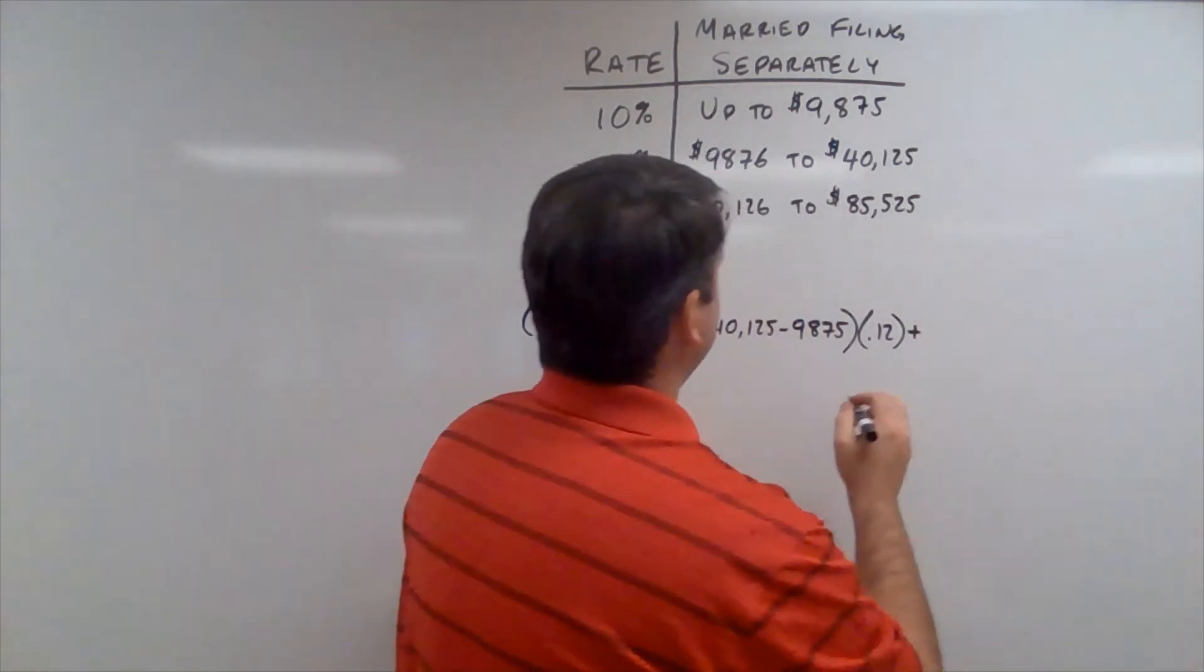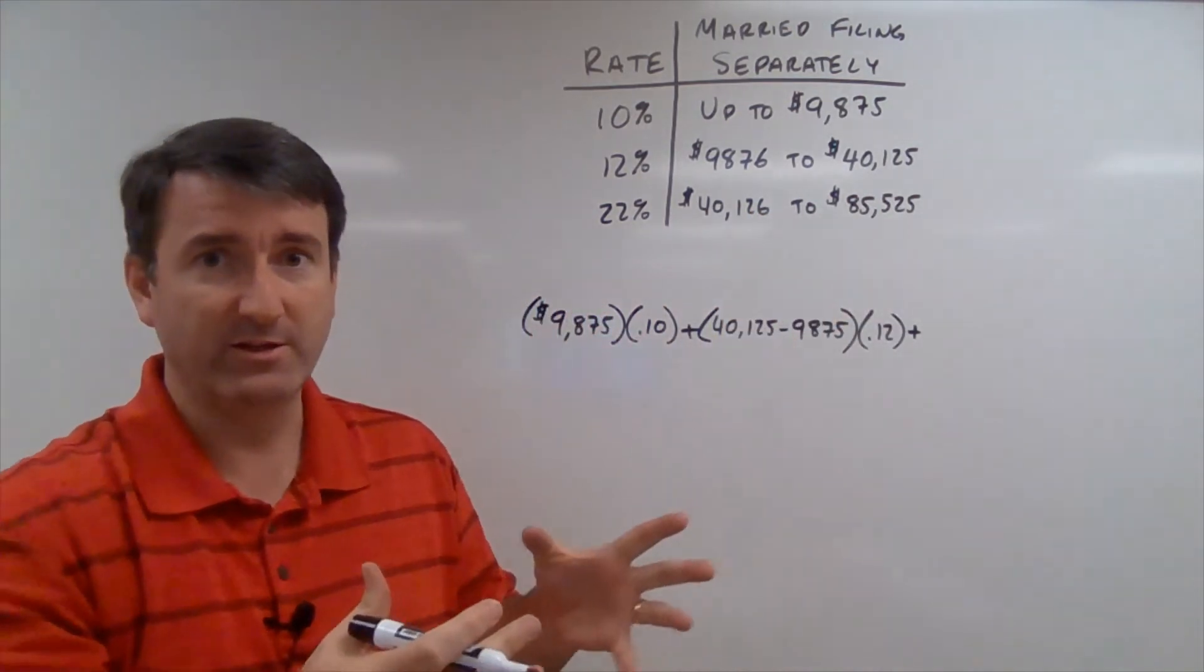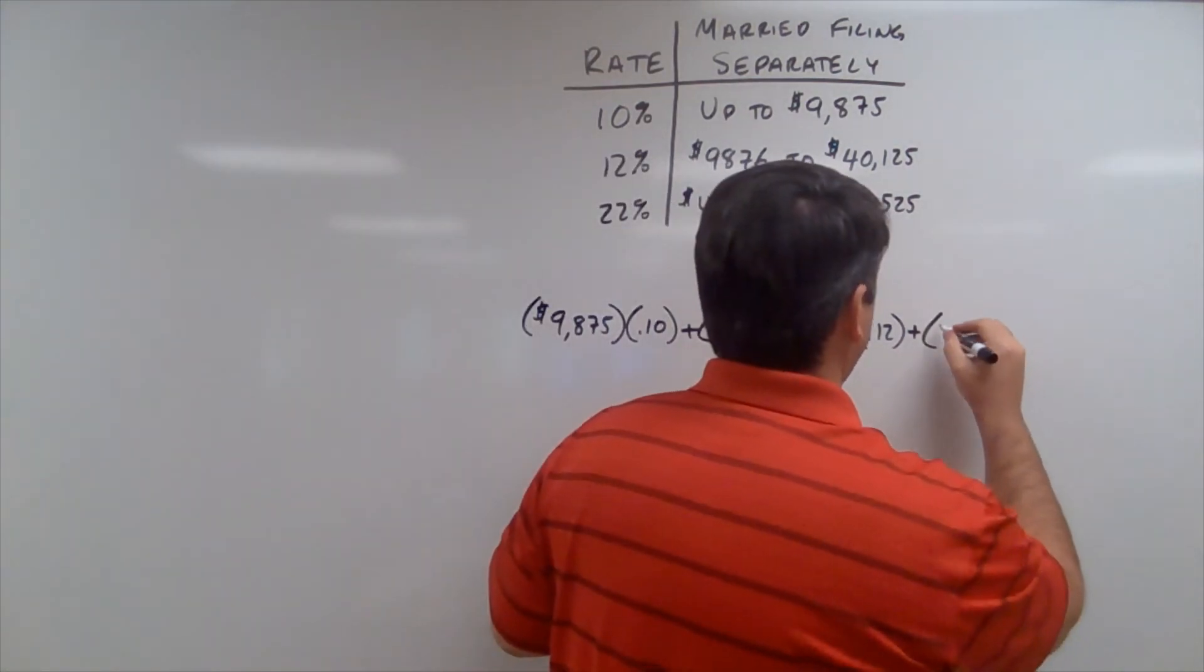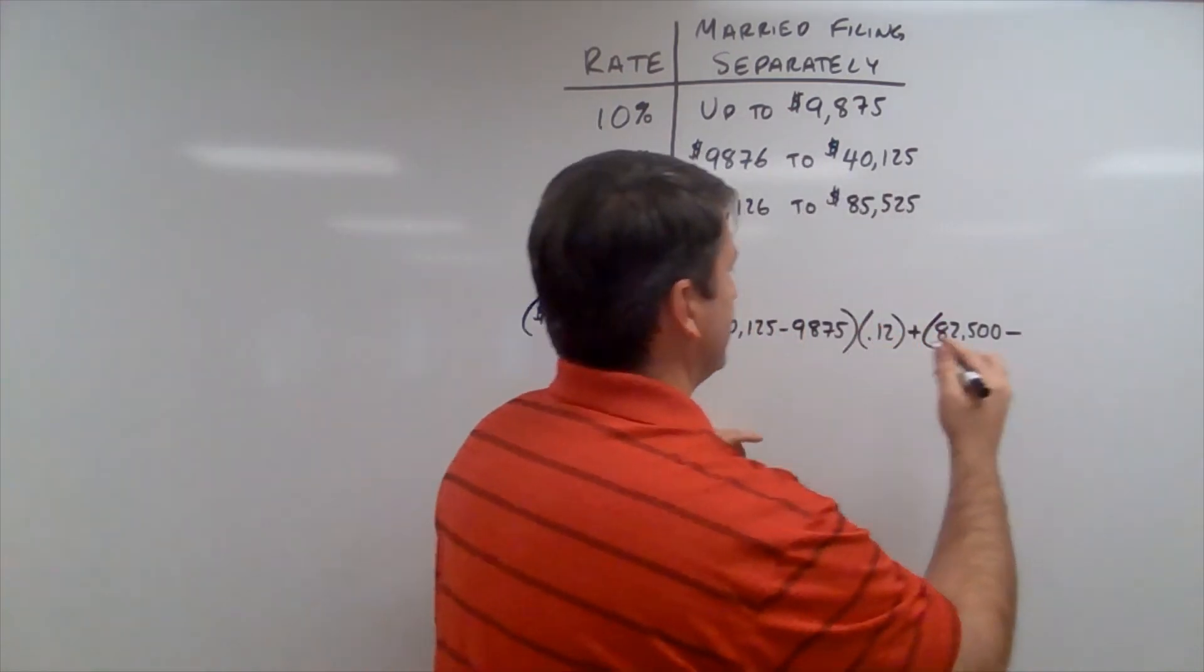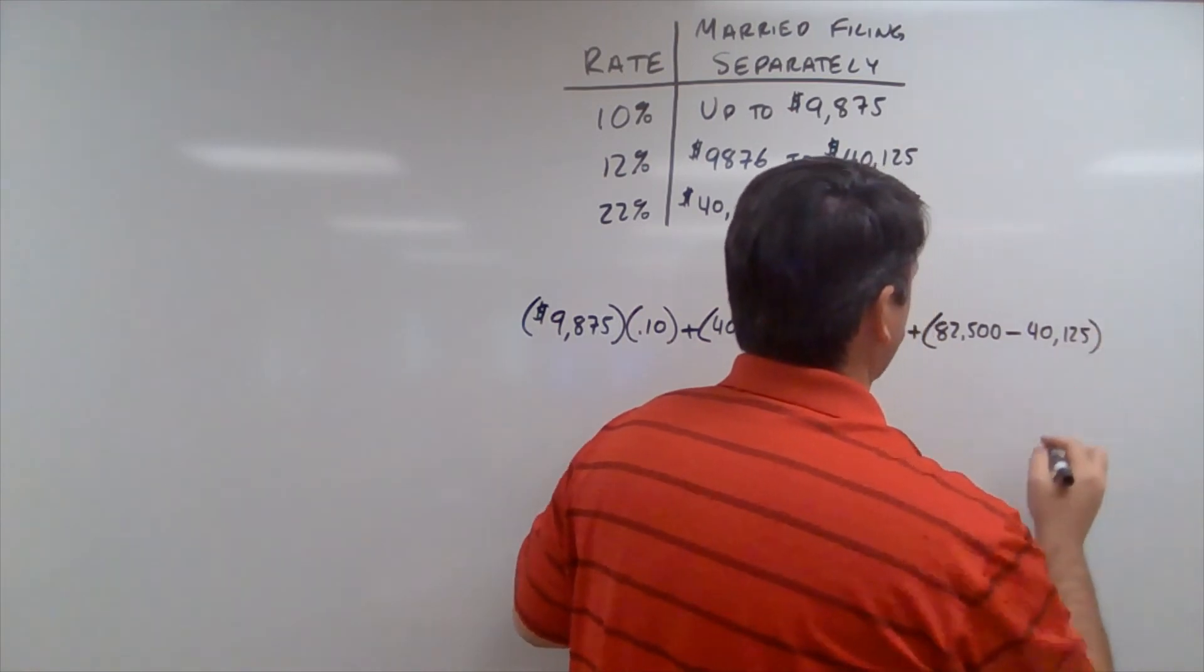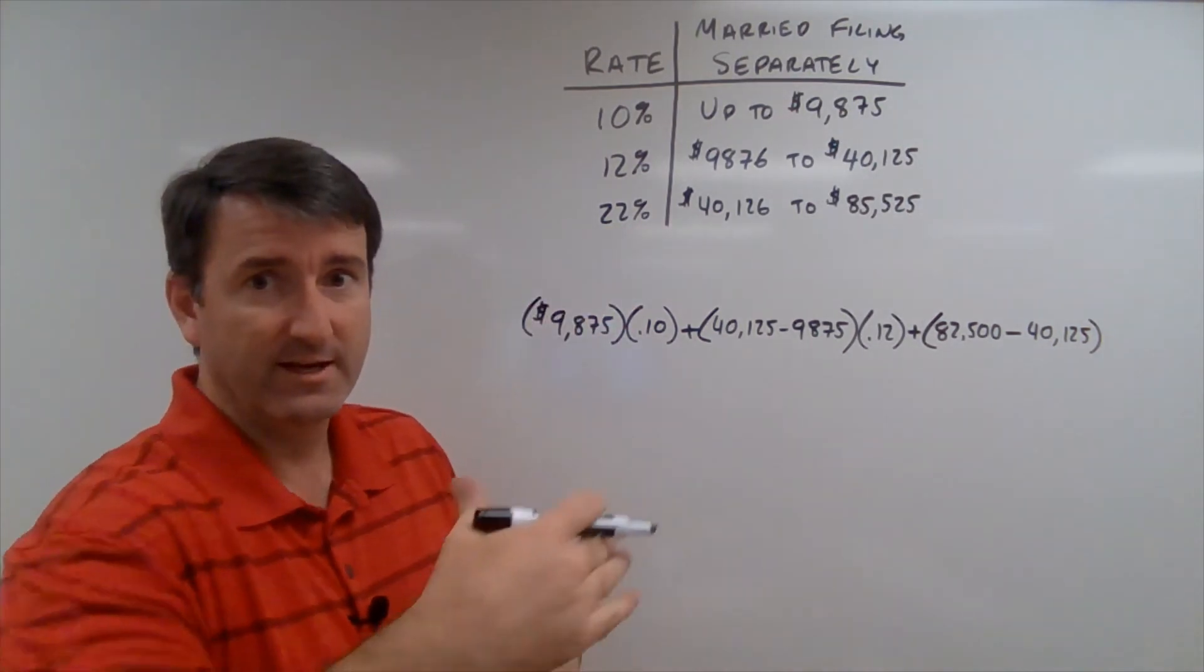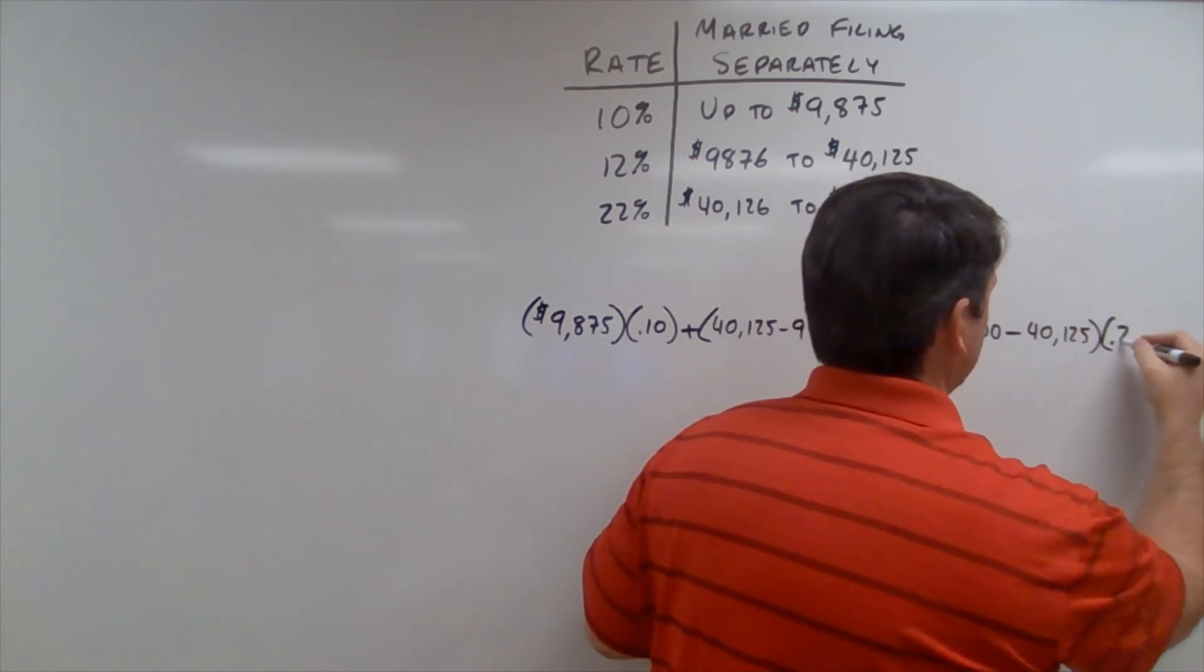And then finally, we're going to add to that. Now, notice all of this money isn't going to be included in her calculation because she only made $82,500. So, that's where we're going to start. $82,500. And we're going to subtract the $40,125. That's how much of her income is in this 22% tax margin. So, that's going to be taxed at 22%. So, we're going to multiply by .22.